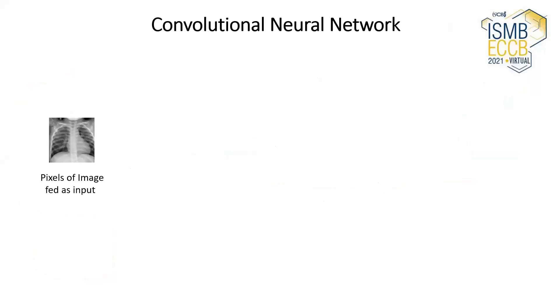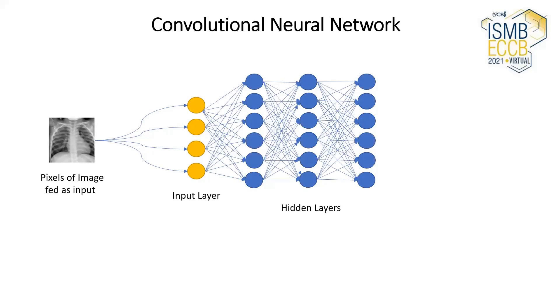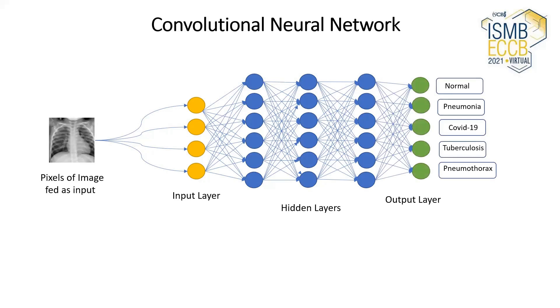A CNN is a deep learning technique which takes pixelated data as input and assigns significant learnable weights and biases to different aspects in the data while having the option to separate one from the other. The pre-processing needed in a CNN model is significantly lower when compared with other conventional algorithms. While in conventional techniques filters are hand-designed, CNN models have the ability to learn these characteristics on their own.